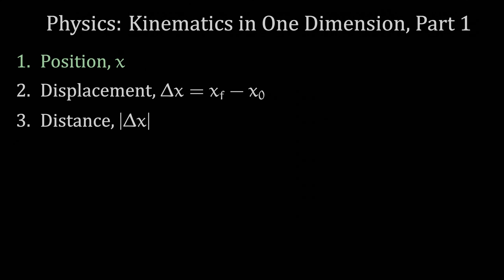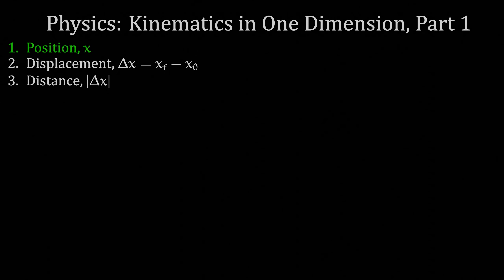Position simply describes where an object is at a given point in time. Position is relative to a coordinate system of your choice. Choosing a convenient coordinate system can often simplify the mathematics in your problem. For one-dimensional kinematics, a coordinate system is just a number line.